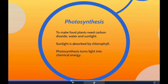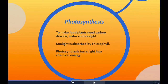Photosynthesis takes place in the leaves of plants, which are made up of very small cells. Inside these cells are tiny structures called chloroplasts. Each chloroplast contains a green chemical called chlorophyll, which gives leaves their green color. Chlorophyll absorbs the sun's energy, and that energy is used to split water molecules into hydrogen and oxygen. Oxygen is released from the leaves into the atmosphere, while hydrogen and carbon dioxide are used to form glucose — food for plants.